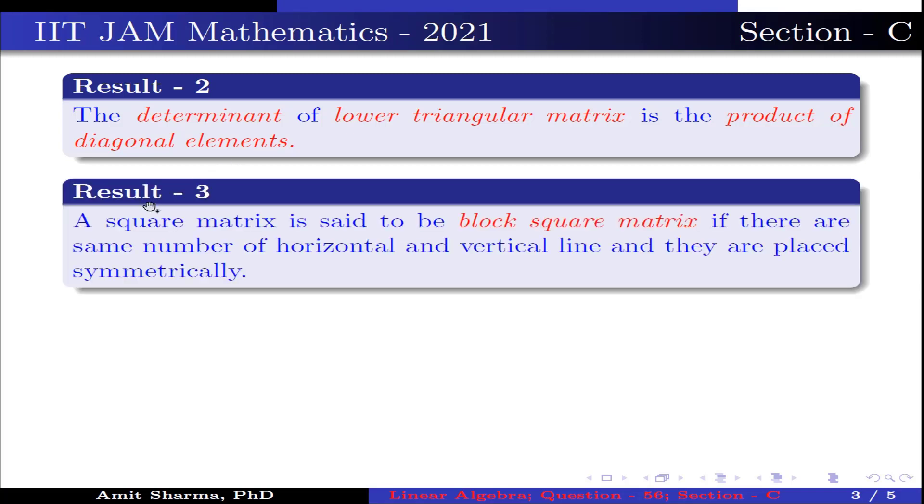Result number 3: A square matrix is said to be block square matrix if there are same number of horizontal and vertical lines and they are placed symmetrically.